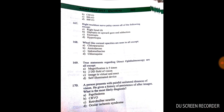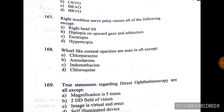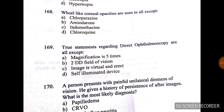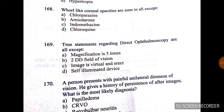Question number 165: compared to blood, vitreous has high concentration of — option A is correct. Question number 166: cherry red spot — Holland classification in CRAO. Question number 167: right trochlear nerve palsy causes all of the following except — it causes diplopia, exotropia, hypertropia, but does not cause right head tilt, so that is the exception.